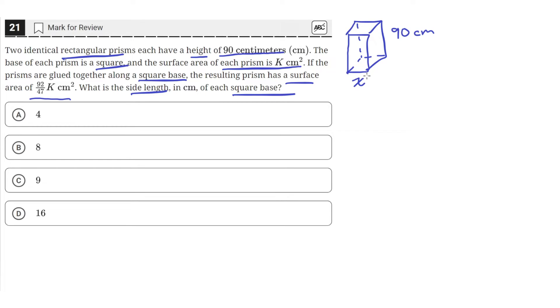And then we glue another rectangular prism that's identical to the first, and we glue it along the bottom where the square base is. It'll look something like this. And we're given that the surface area of this large resulting rectangular prism is 92 over 47 k.